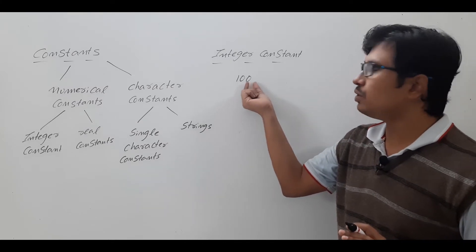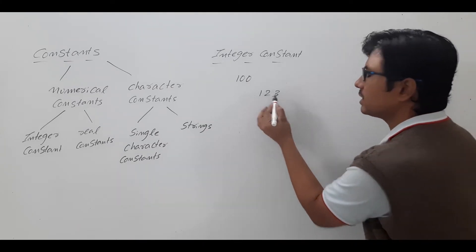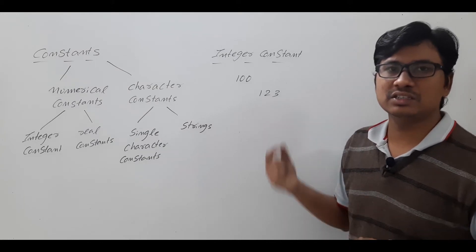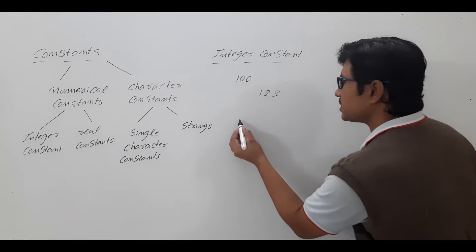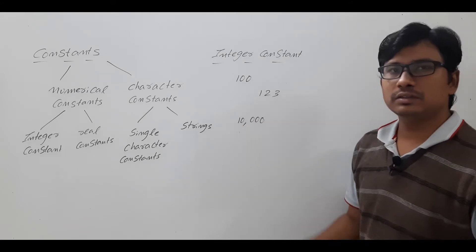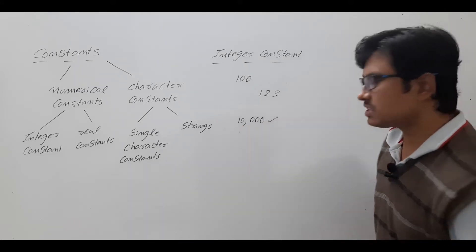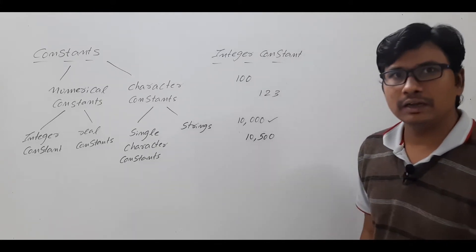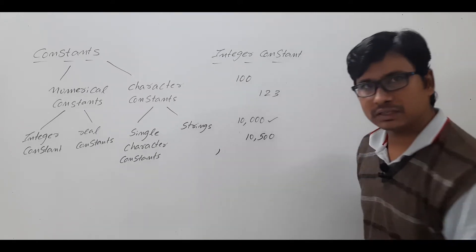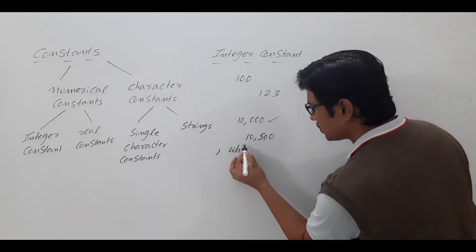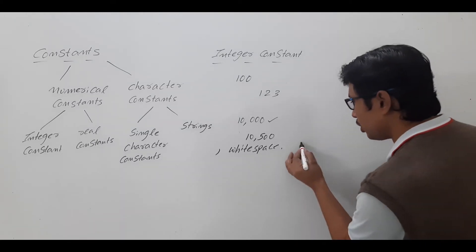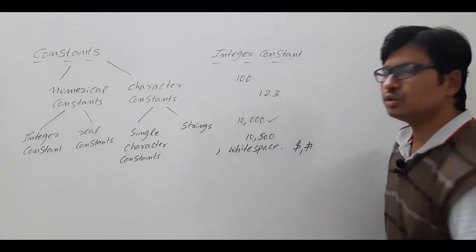You can use the digits 1, 2, 3 — because you have digits from 0 to 9. Using combinations of those digits you can generate integer constants. But remember, if I say 10,000 rupees we normally write it with a comma. However, when writing integer constants in C programming, you should avoid commas, avoid white spaces, and avoid non-digit characters such as dollar or hash.